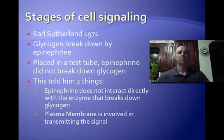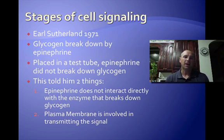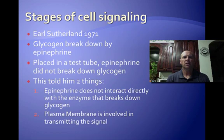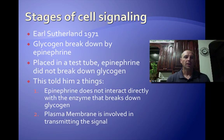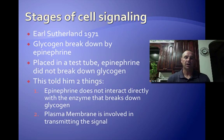When we talk about the signal transduction pathway, we have to bring into account a man named Earl Sutherland. In 1971, he mapped out how this actually works. He noticed that epinephrine being produced by a cell caused the breakdown of glycogen into glucose. But if you put epinephrine into a test tube with glycogen alone, it had no effect at all — it didn't break it down. So that brought him to two conclusions: that epinephrine was not causing the breakdown of glycogen directly, and that the plasma membrane must be involved somehow, because it's receiving the message of the epinephrine and then changing that message to make it break down glucose.